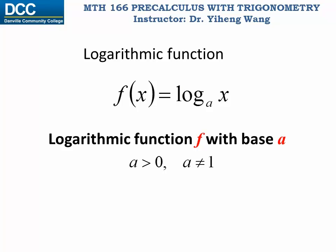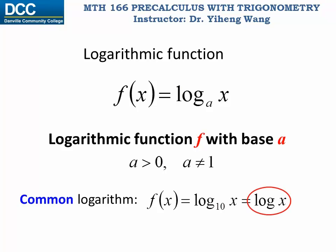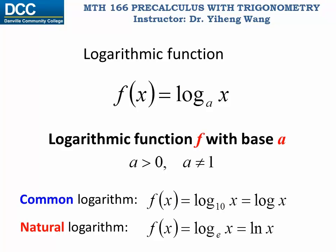There are two special logarithmic functions. The first one is common logarithm. When you see that the base is missing, the implied base is 10. Another one is natural logarithm. The base here, as you guessed it, is E, the natural base constant, and it is normally written as ln.